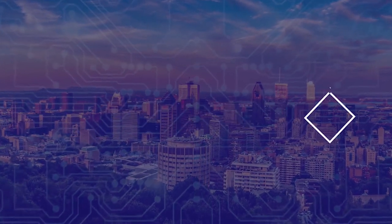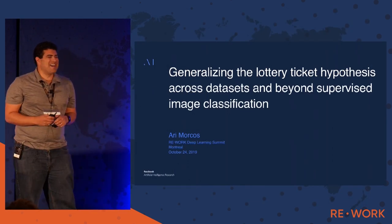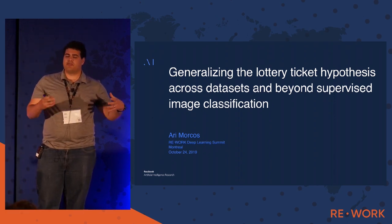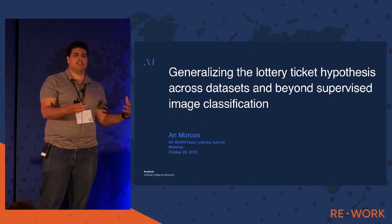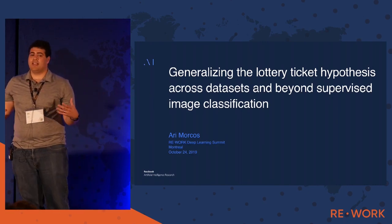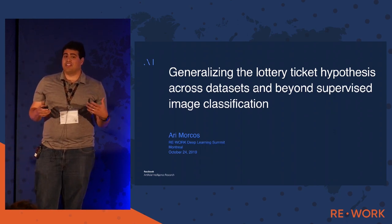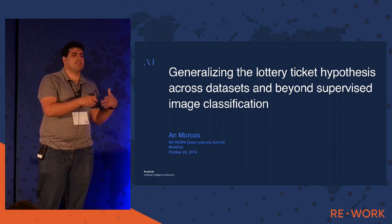I'm going to talk about some follow-up work we've done to the original lottery ticket hypothesis, answering some of the questions that were foreshadowed and talking about how we might be able to take this initial observation from fairly limited tasks and generalize it to new contexts, and really probe why these lottery tickets work and whether they're doing something fundamentally interesting or something more simple.